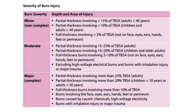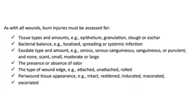That number gives us the severity of the burn — minor, moderate, or major. Partial thickness involving 15% of total body surface area for adults, or 10% for children, or full thickness involving less than 2% of total body surface area not on the face, eyes, ears, hands, or feet are categorized accordingly. As with all wounds, we also look at tissue type and amount, bacteria balance, exudate type and amount, presence of odor, wound edge type, and the peri-wound.